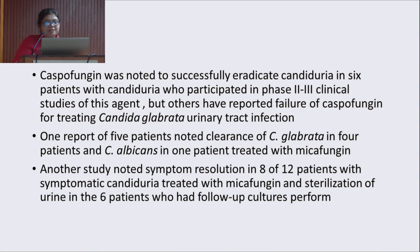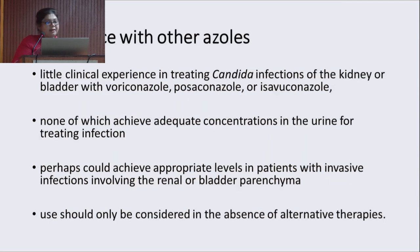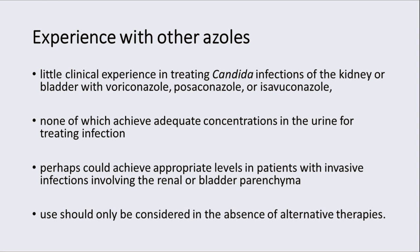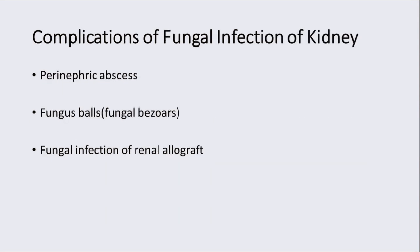Other agents for fluconazole-resistant Candida UTI include caspofungin and micafungin, which are showing promising results in a few studies. Experiences with other agents like voriconazole and posaconazole are very limited, so their use should only be considered if no other alternative therapies are available. Complications of fungal infection of the kidneys include perinephric abscess, fungal ball (also known as fungal bezoars), and fungal infection of the renal allograft.